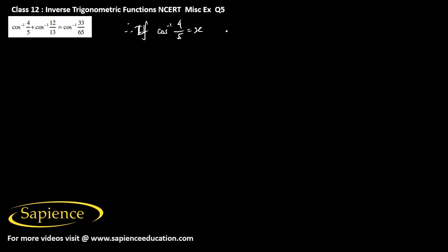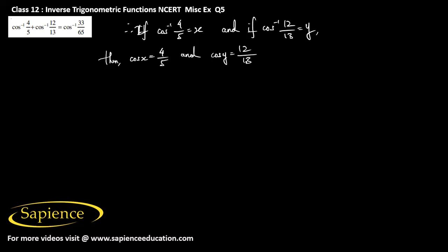We have to prove that the left hand side, which is cos inverse 4 by 5 plus cos inverse 12 by 13, is equal to the right hand side, which is cos inverse 33 by 65. So on the left hand side, suppose we take cos inverse 4 by 5 equal to x, and cos inverse 12 by 13 equal to y. Then we have cos x equal to 4 by 5, and cos y equal to 12 by 13.